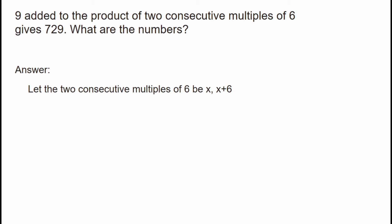Now we assume two numbers: x and x plus 6. We multiply them and add 9 to get 729. So the equation is: x into x plus 6, plus 9, is equal to 729.